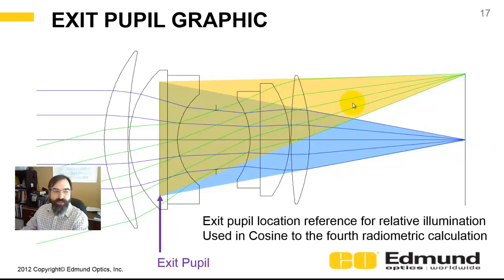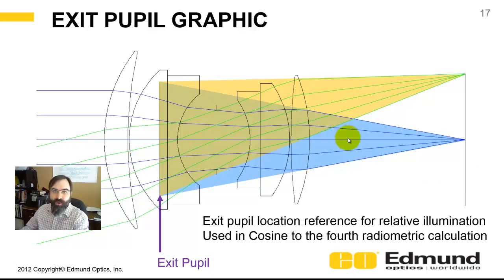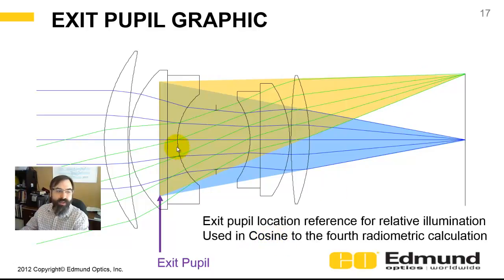I'll overlay the same shaded cones on top of the ray trace. The exit pupil is back here. The exit pupil is an important location to reference your relative illumination calculations — if you're looking at a white background, the corners may appear darker on your image plane. That's called relative illumination. The radiometric calculation is usually cosine to the fourth, and that cosine to the fourth is the angle defined by the chief ray. So the location of the exit pupil is very important for that.